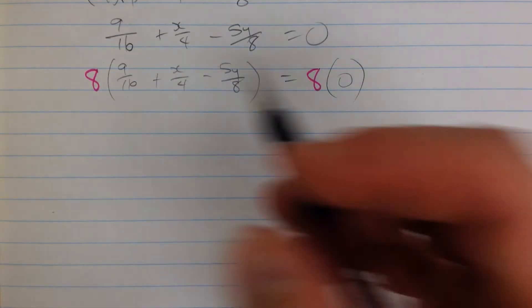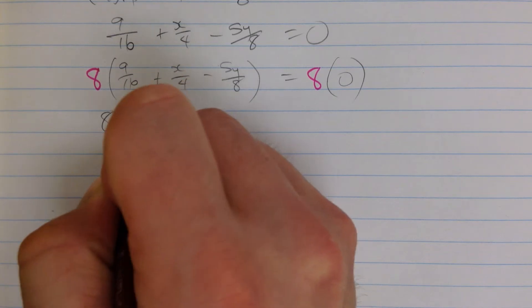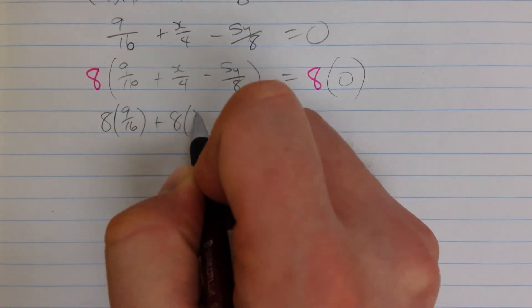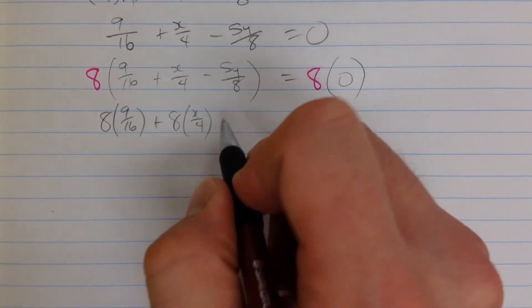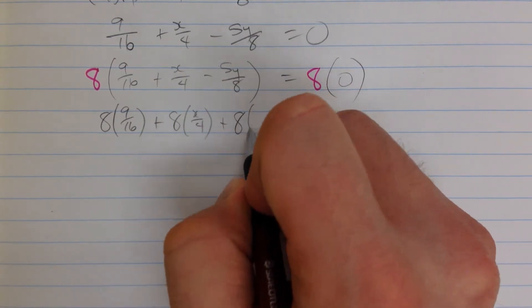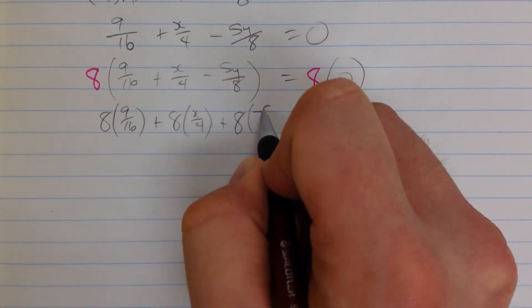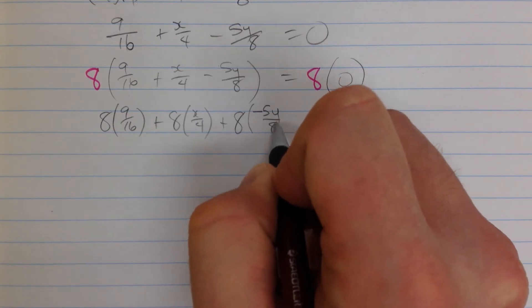So I'm going to rewrite this as 8 times 9 sixteenths, plus 8 times x over 4, plus 8 times, being careful here with my sign, negative 5y over 8.